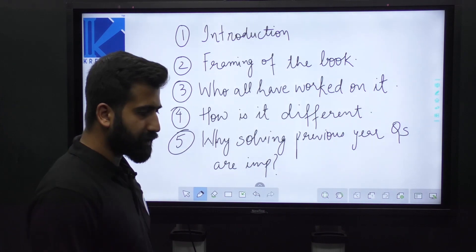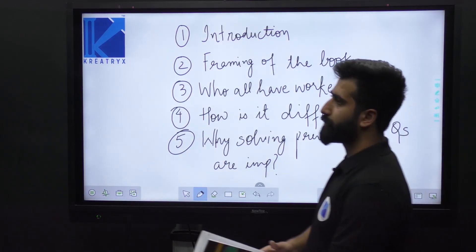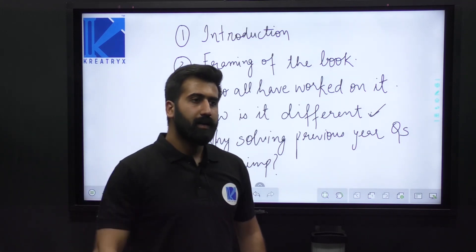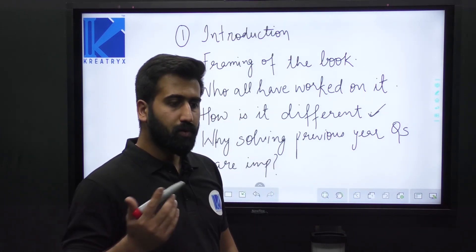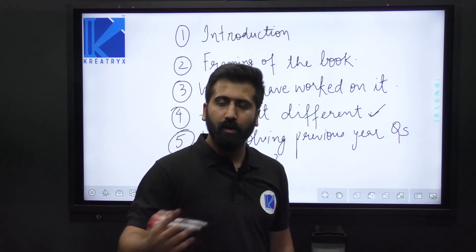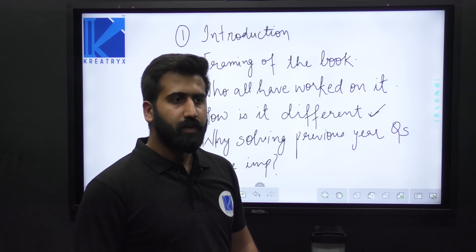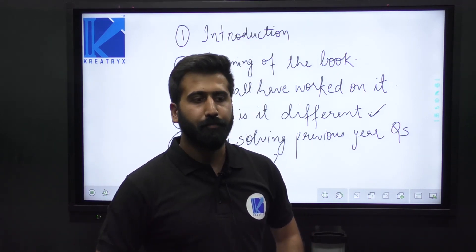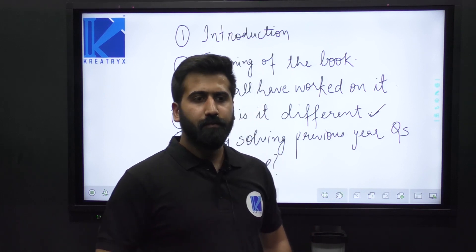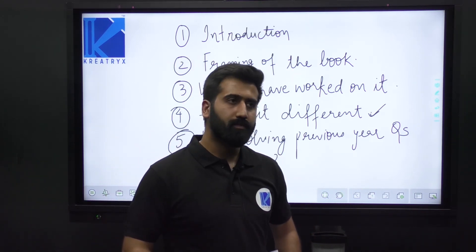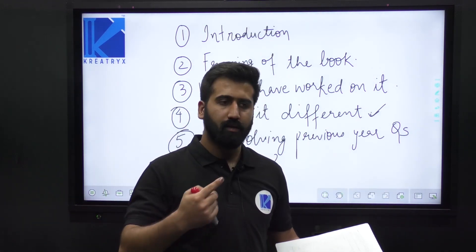The next and most important part is how is this book different? All the solutions in this book are very detailed. If a question has two alternative solutions — one is the long conventional method and the other is a short trick — we have included both solutions. If a student wants to learn the conventional method, they can go for the conventional solution. If a student has already developed the concept, they can go for the short trick. This is the basic difference — we have tried to include all types of solutions for every question.